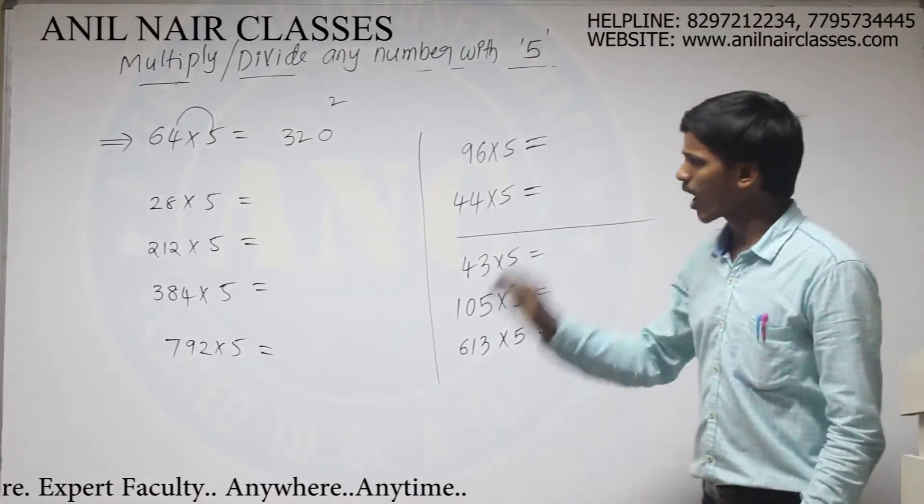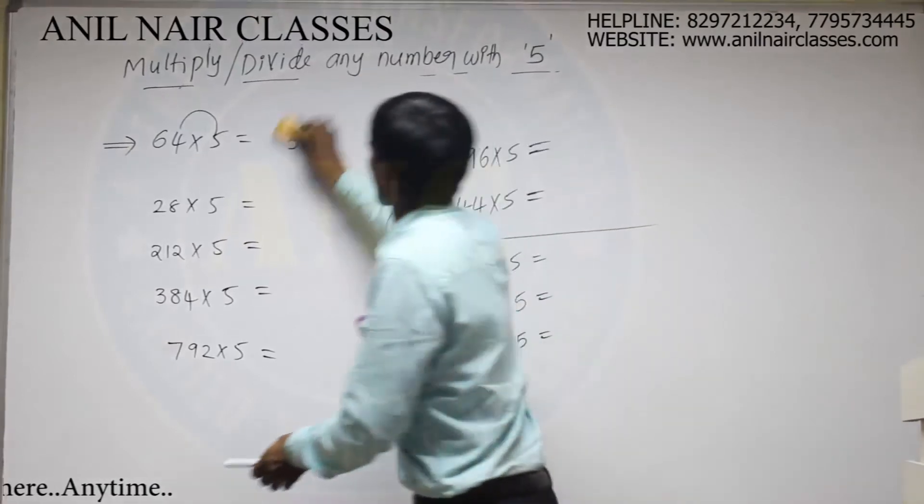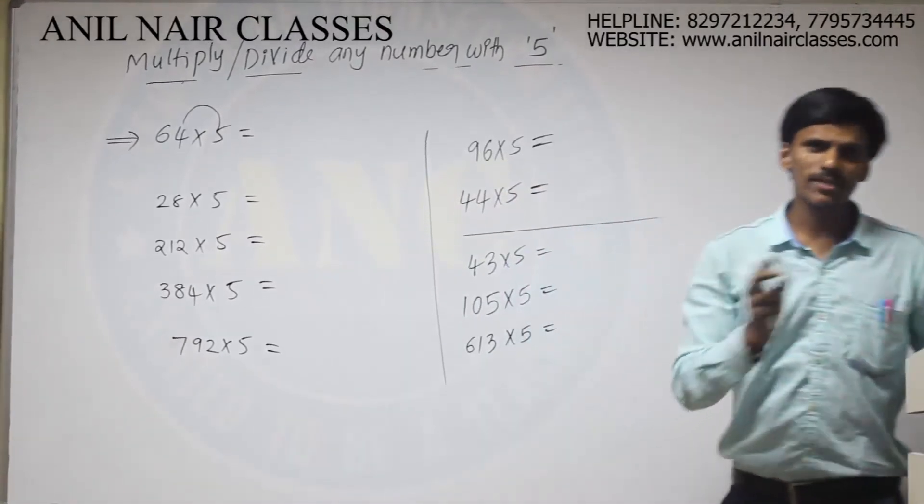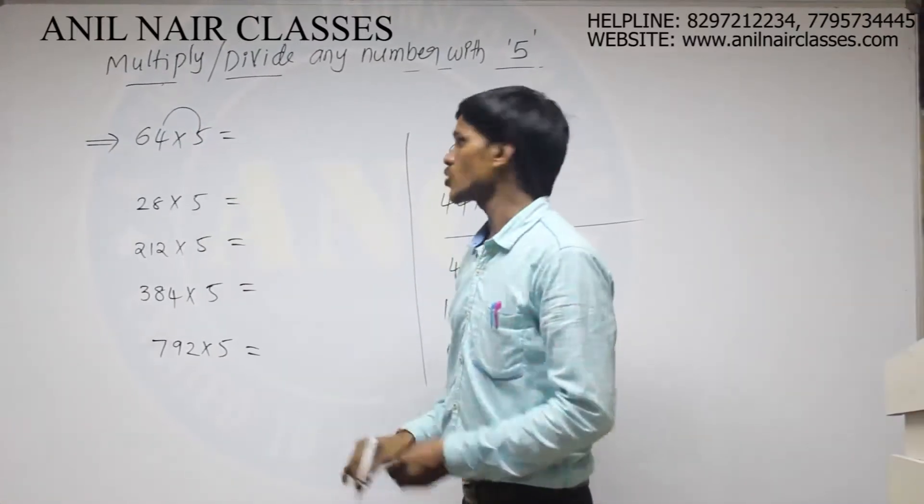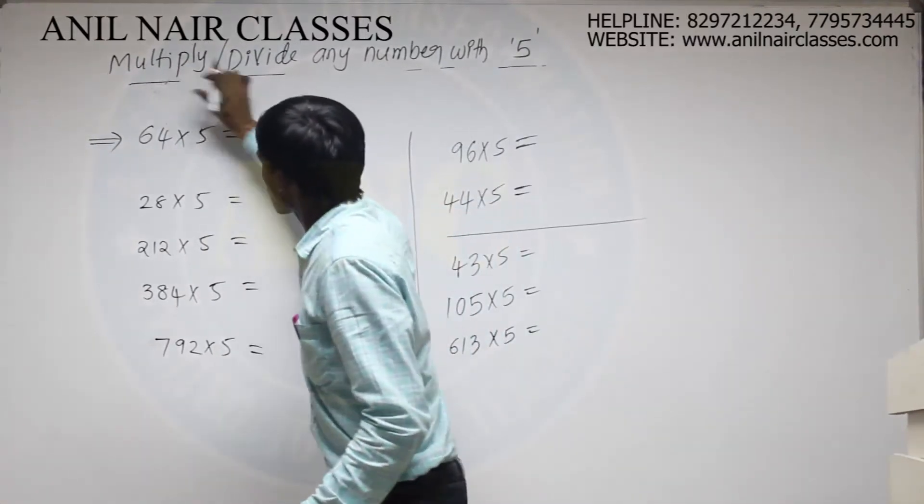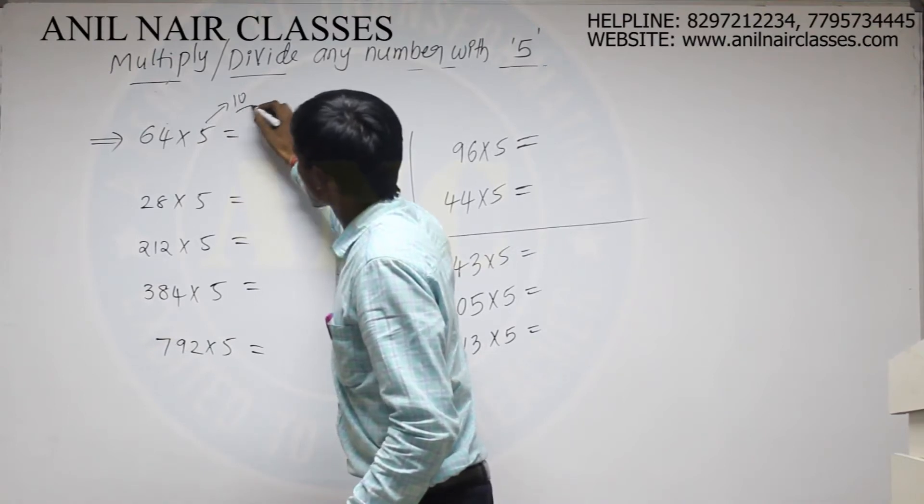So in order to save the time, let us discuss one best model. How to multiply any given number with 5. So what I will do, I will convert this 5 into 10 by 2.